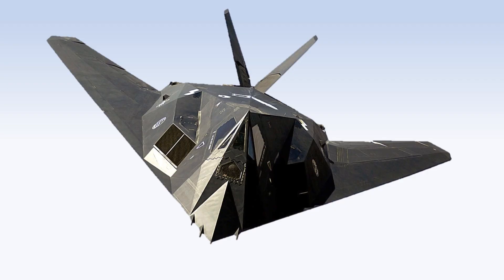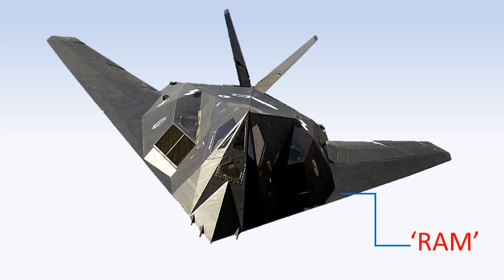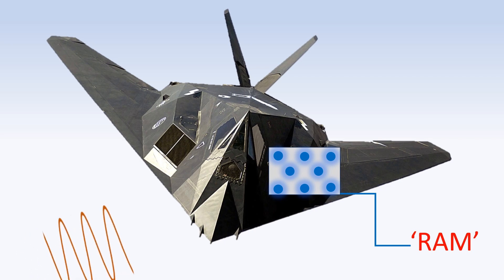The outer surface of the aircraft is coated with radar absorbent material, or RAM. It contains tiny spheres of carbonyl iron. Radar waves induce molecular oscillations, which lead to the conversion of radar energy into heat.